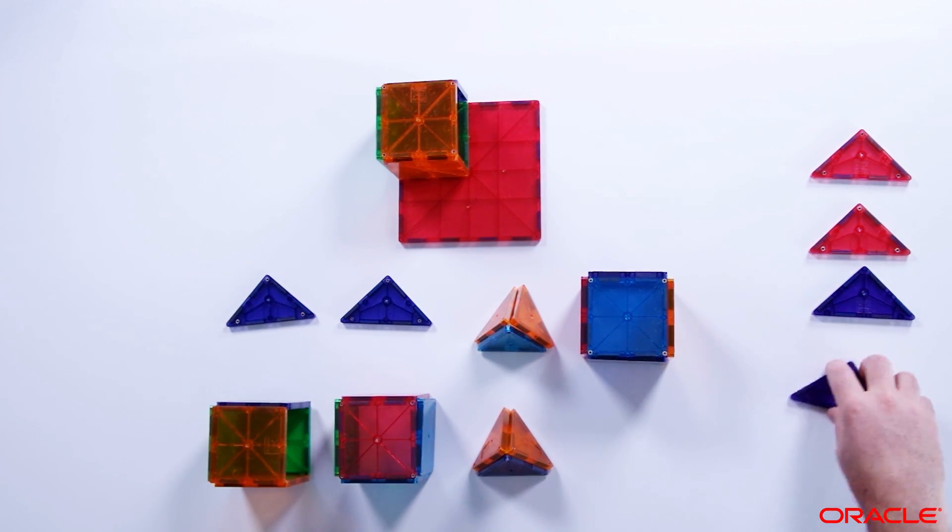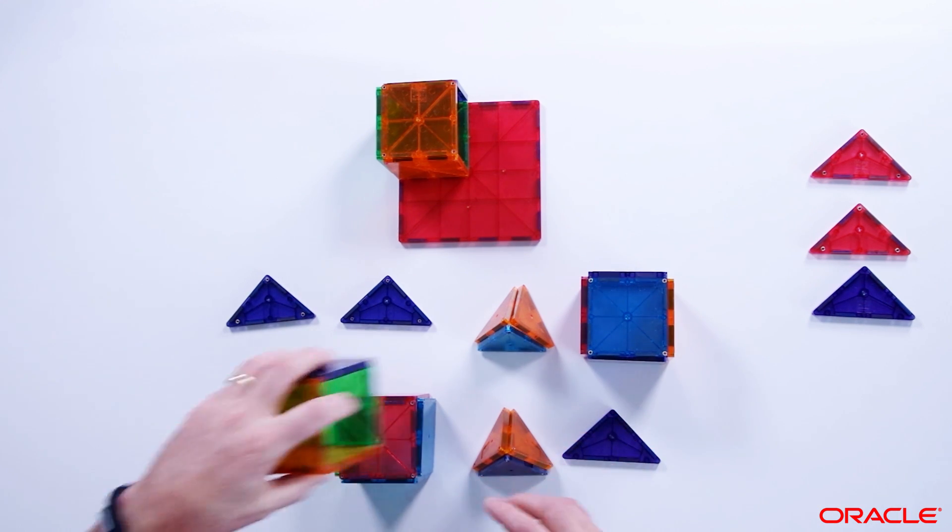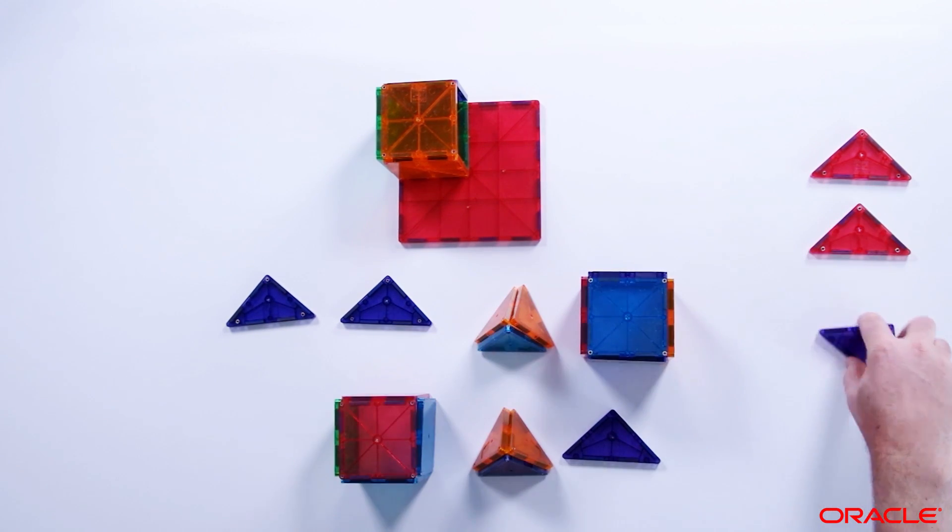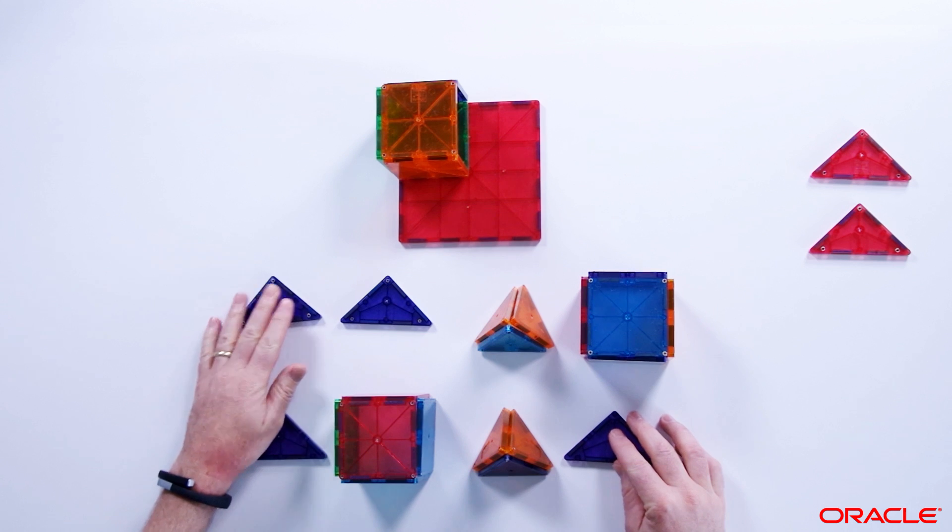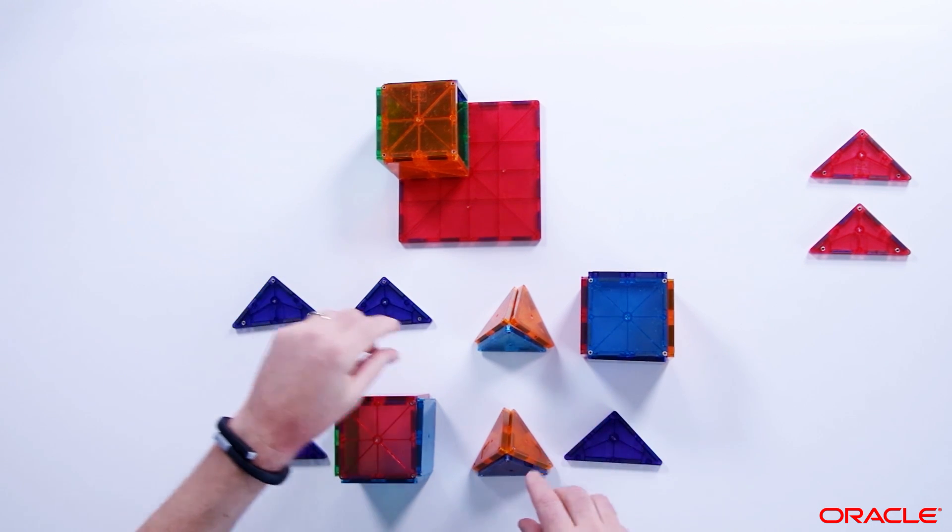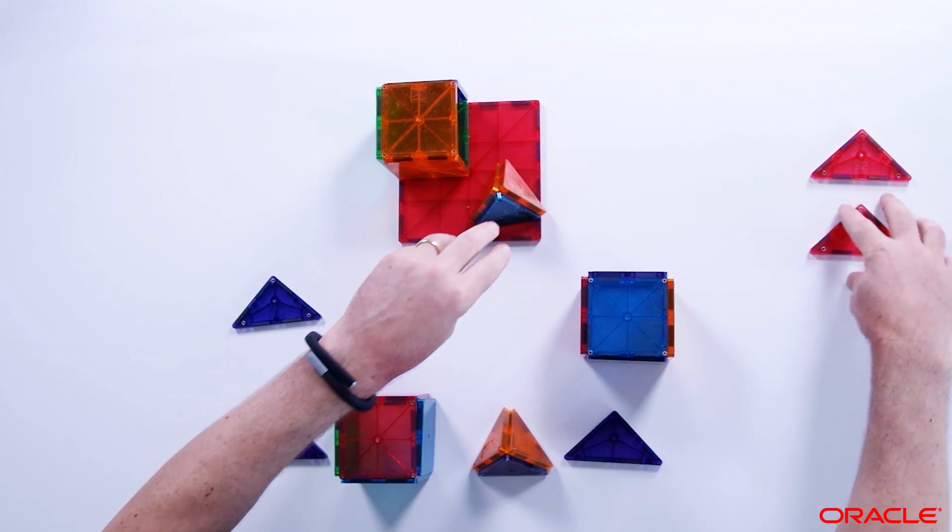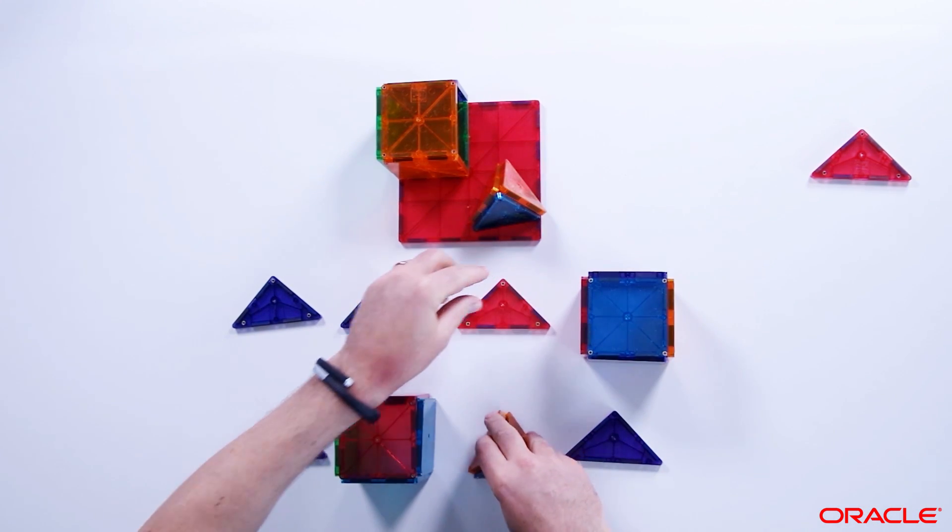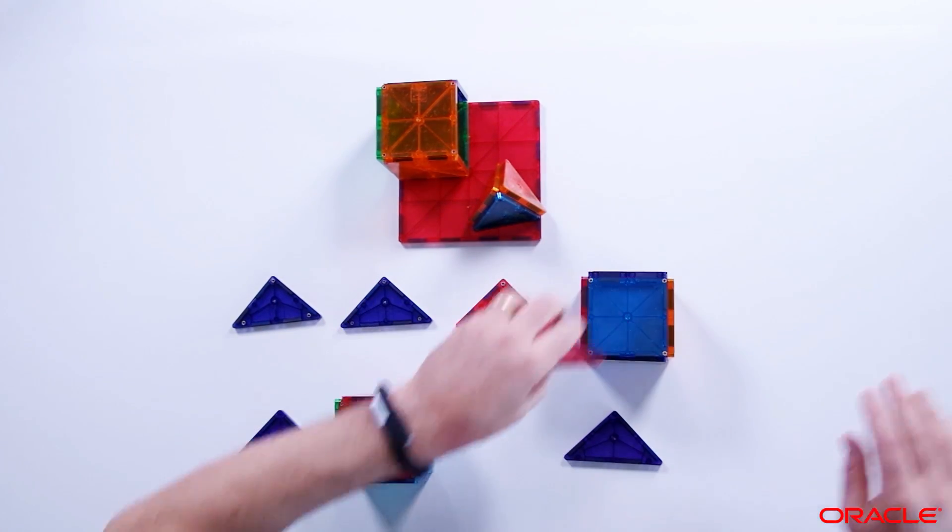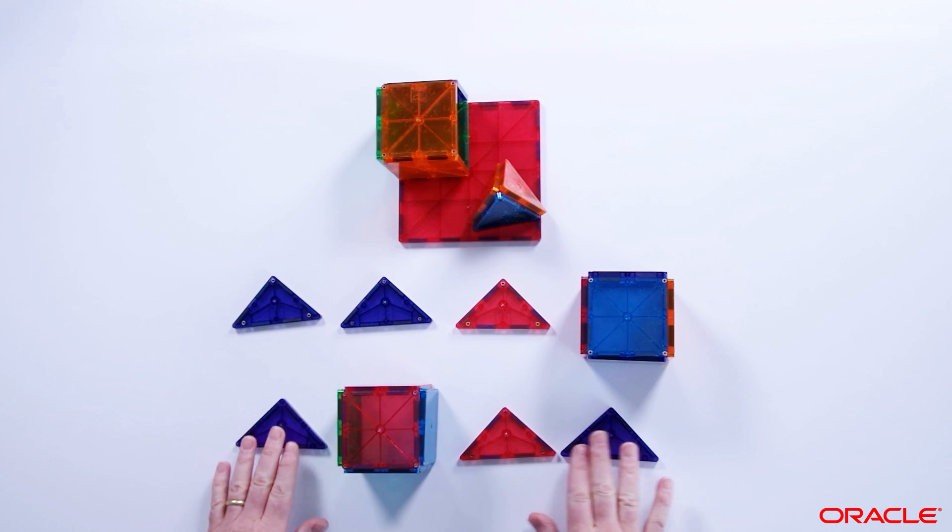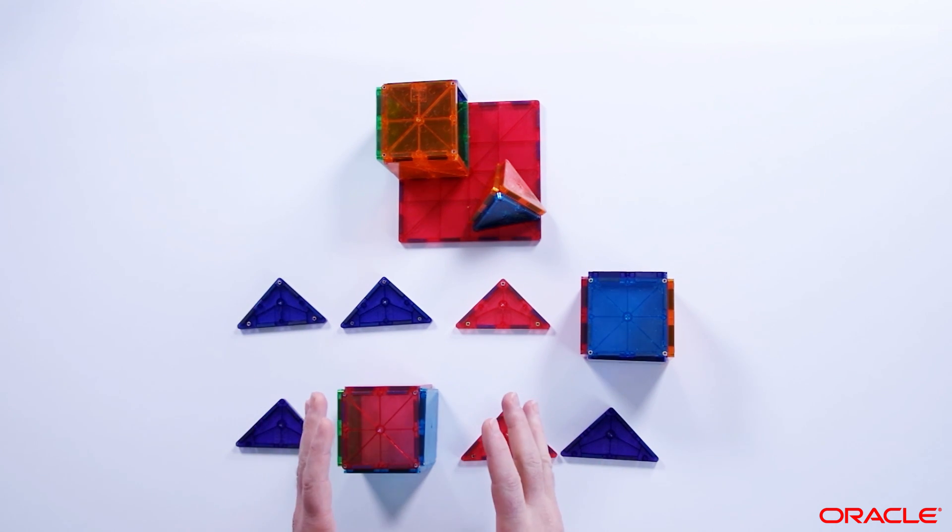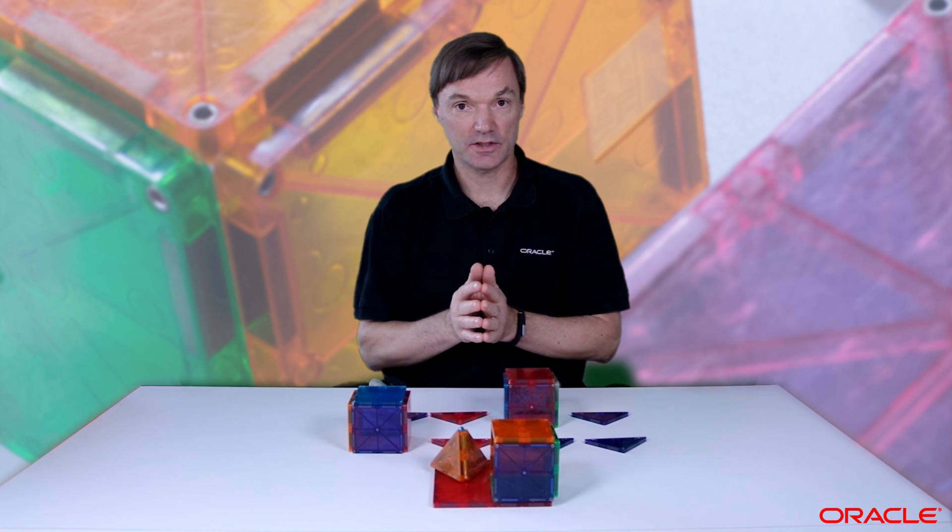This process will end up saving a whole bunch of space in the block. And it doesn't stop with those repeating values. You can see these two values are the same, so the database will put one of them in the header, replace it with a pointer, and remove the other one and replace it with a pointer. So now we've freed up a whole bunch of space in this database block by doing this deduplication process.